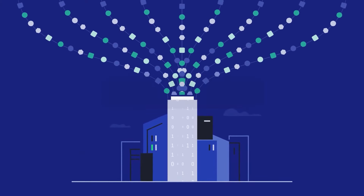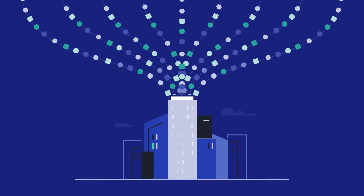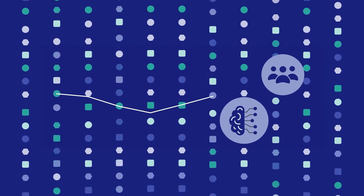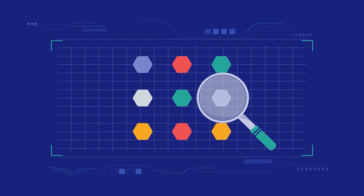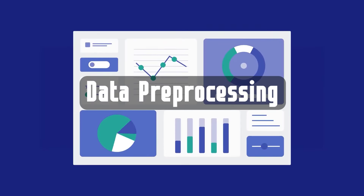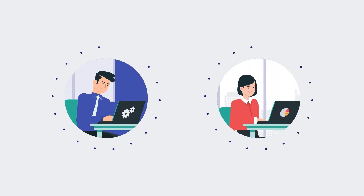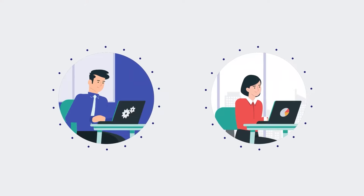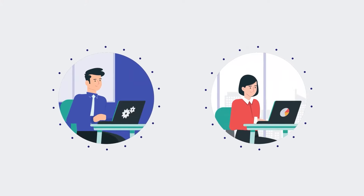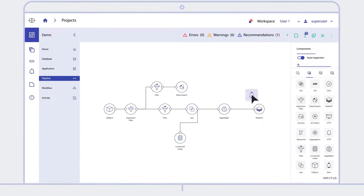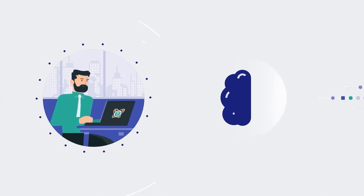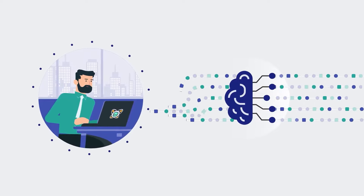Data collection: first, we collect a bunch of data relevant to the problem we want the computer to solve — this could be anything from images to sensor readings. Data pre-processing: next, we clean up and prepare the data for the computer to use and understand. Feature engineering: we identify the important aspects of the data, called features, that will help the computer make predictions or decisions.